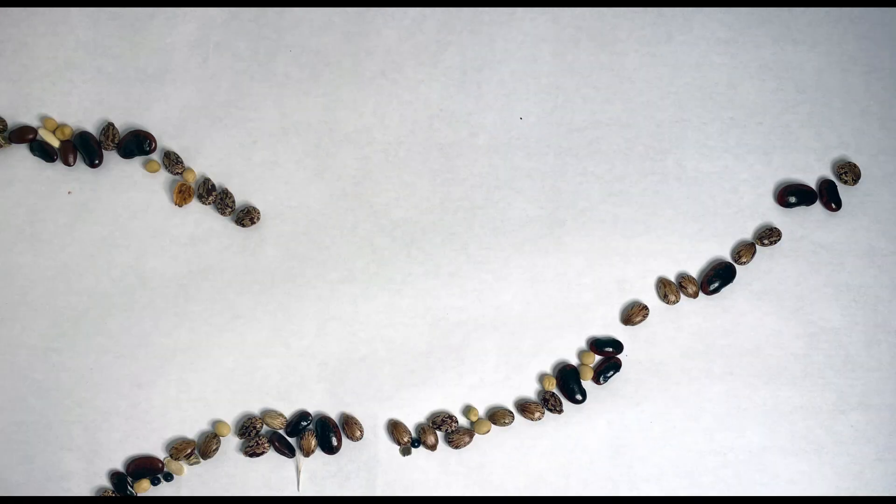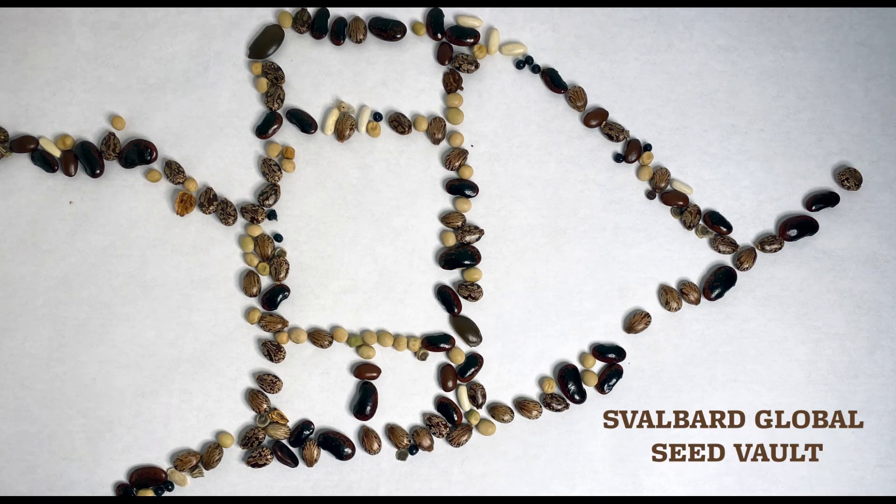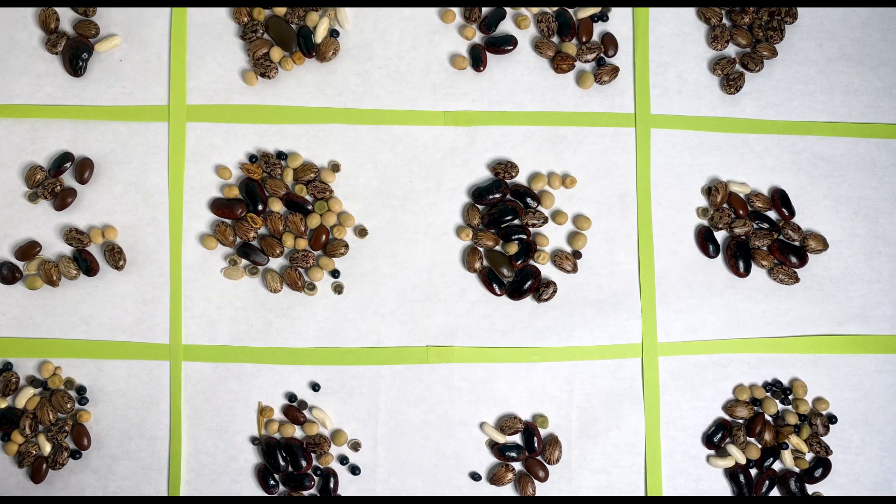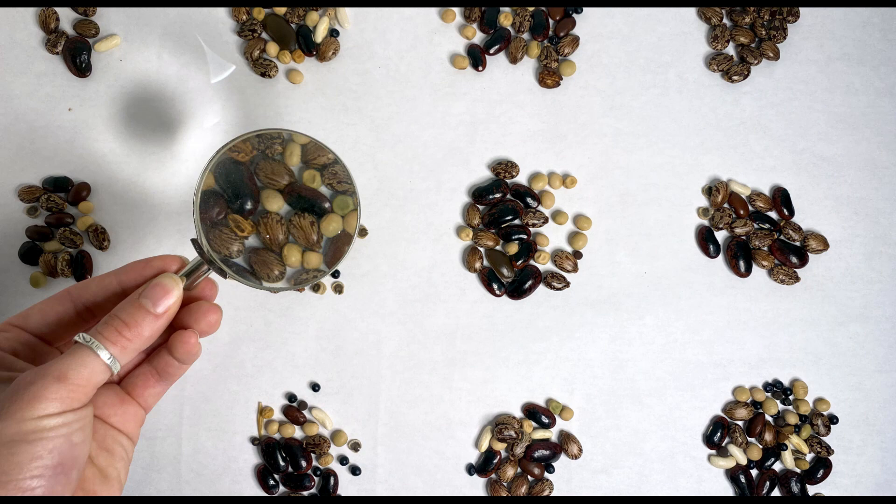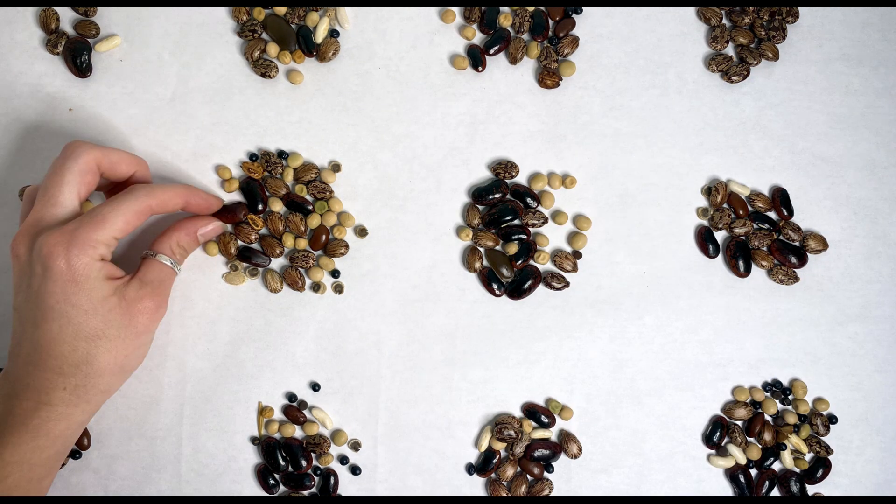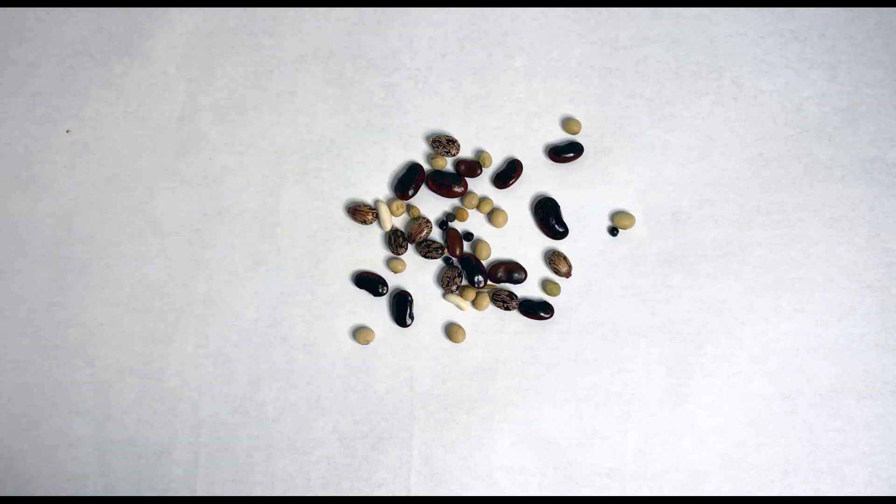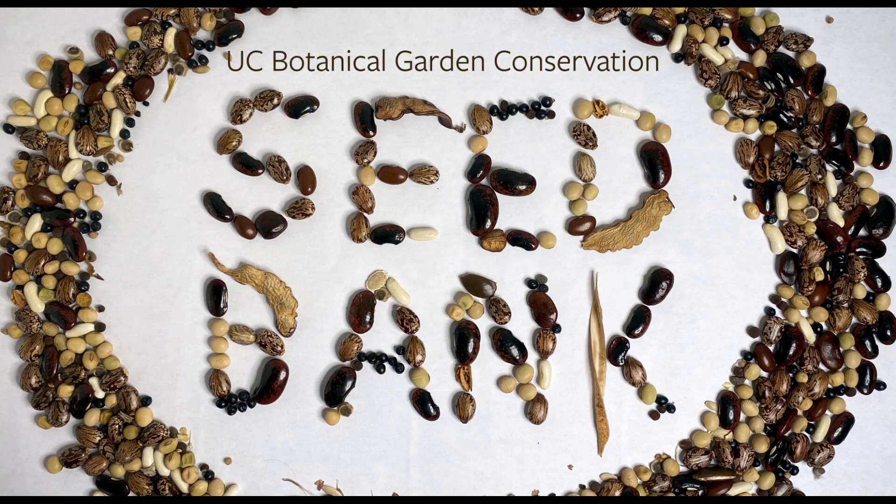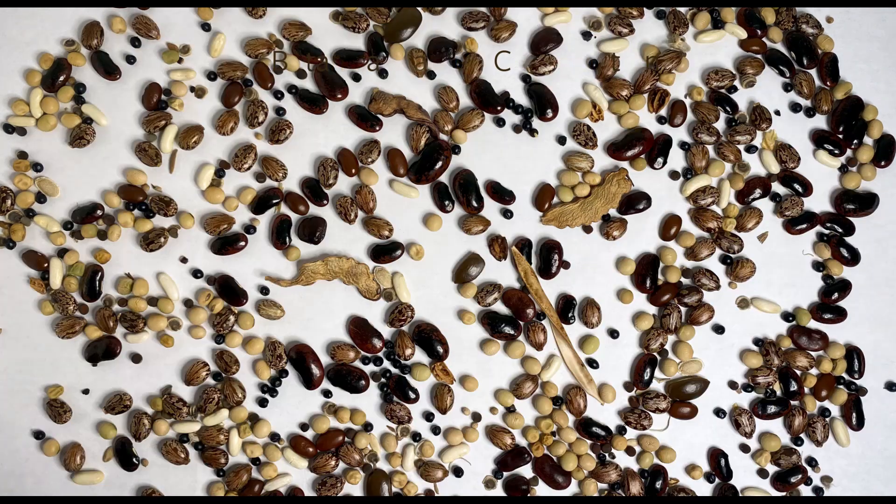You might have heard of a seed bank before, maybe this one on the side of a frozen mountain in Norway or the Millennium Seed Bank at Kew. And you might appreciate the importance of seed banks for research and safeguarding the world's plants. But did you know that the UC Botanical Garden is conserving rare and endangered plants within our own seed bank?